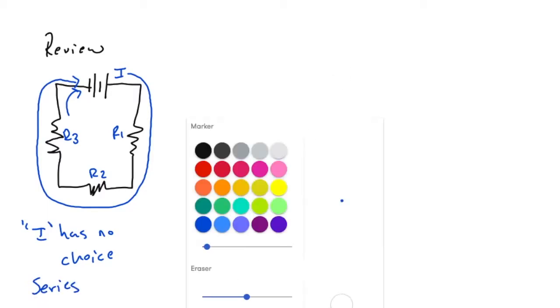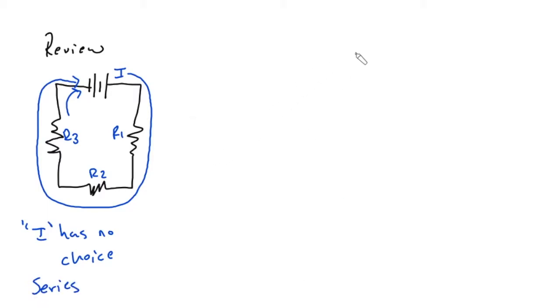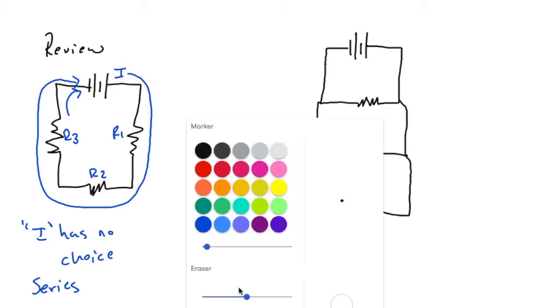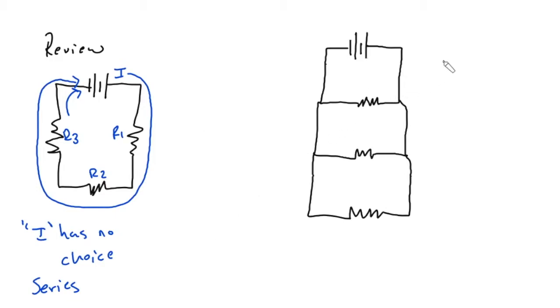Now when we look at a parallel circuit, it's going to be slightly different. We will still have this cell or battery because that's required—every circuit needs to have a cell or battery, aka a source of potential difference. Now I'm going to have R1, here's my R2, and here's my R3.